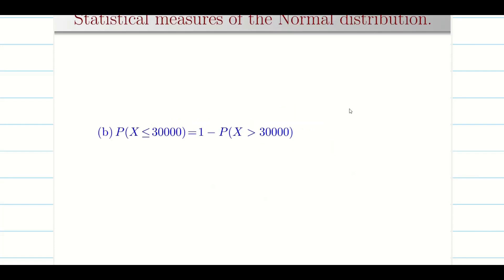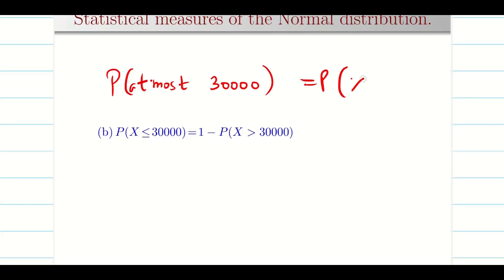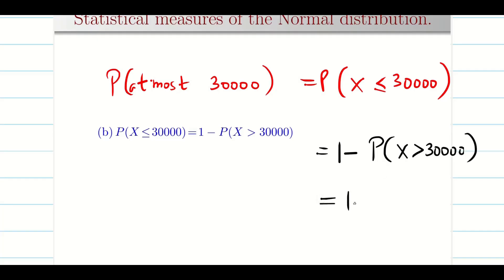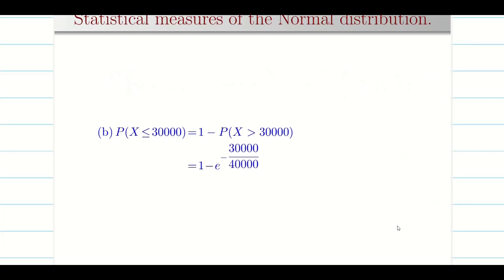What is the probability that the tyre will run at most 30,000 kilometers? At most is probability of x less than or equal to 30,000. Using the classical result that total probability is 1, I can write 1 minus probability of x greater than 30,000. Immediately I can use the result e^(minus lambda t), where t is 30,000 and lambda is 1 by 40,000. The result is 1 minus e^(minus 3/4). You can easily calculate and find the value.